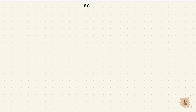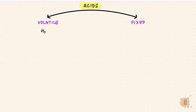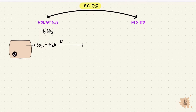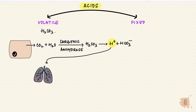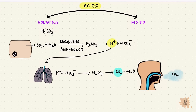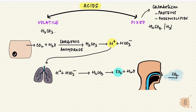The body produces acids quite regularly from metabolism. There are two kinds: volatile and fixed acids. Carbonic acid is a volatile acid, but it isn't produced directly — carbon dioxide is produced by cellular metabolism, combines with water, and by carbonic anhydrase forms carbonic acid, which dissociates into a hydrogen ion and a bicarb ion. The hydrogen ion gets transported to the lungs, where the reverse reaction happens and carbon dioxide gets breathed out. Fixed acids are formed by the catabolism of proteins and phospholipids, like sulfuric acid and phosphoric acid. They are not volatile and don't get breathed out, so they have to get buffered and excreted by the kidney.